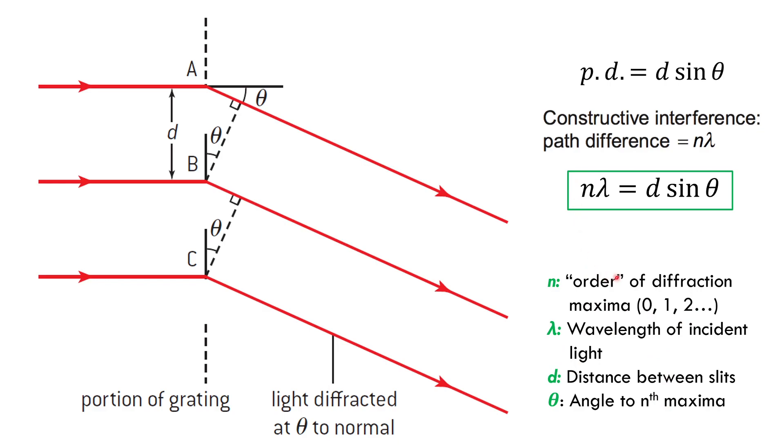Notice if n equals zero, the zeroth order, the angle will always be zero. That's how I would get that. The sine of zero is zero. But everything else, n equals one, n equals two, my first bright spot outside of the middle, my second bright spot outside of the middle, those will have different angles depending on, say, the wavelength of light and the separation of your slits.